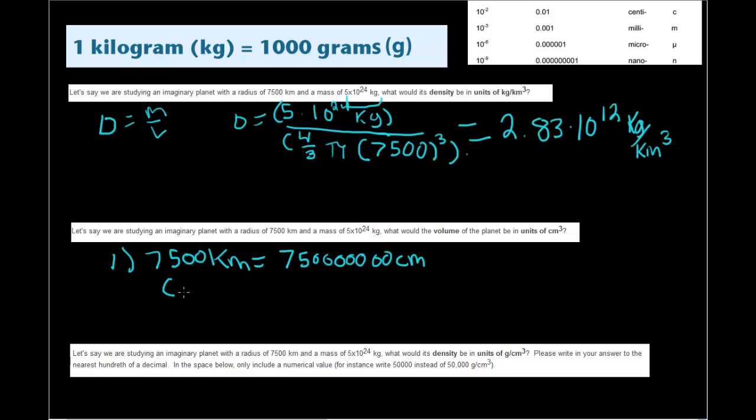You then just plug this into the volume equation, which is 4/3rds pi, 7.5 times 10 to the 8 centimeters cubed. And this will get you an answer of 1.78 times 10 to the 27 centimeters cubed.